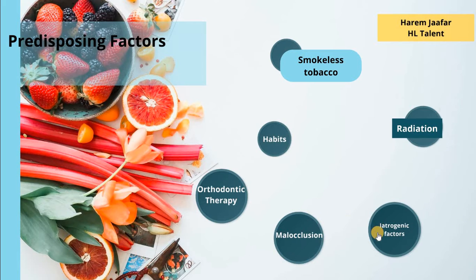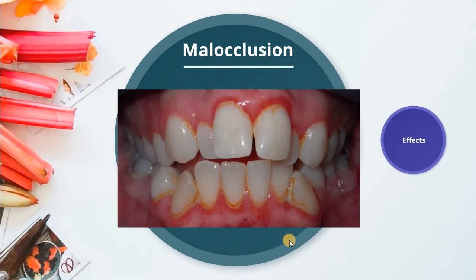We talked about the iatrogenic factors; now we are talking about malocclusion and other factors. In cases of malocclusion, irregular alignment of teeth makes plaque control more difficult than in normal persons, and there are many studies showing a positive correlation between crowding and periodontal disease.